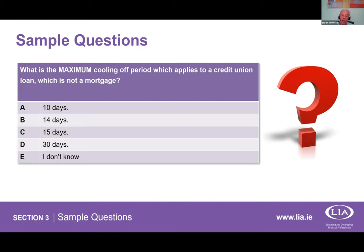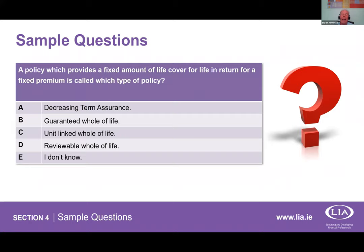Here's a pensions question: 'The earliest normal retirement age which an employer pension scheme can use is — 50, 55, 60, or 55.' Many people know you can take early retirement from age 50, but the question asks about the earliest NORMAL retirement age, which is 60. The distinction between early retirement and normal retirement age is key to getting this right.